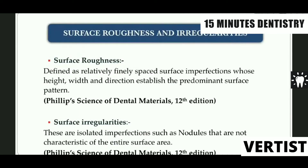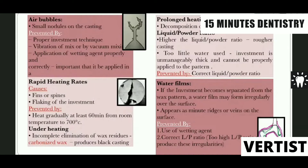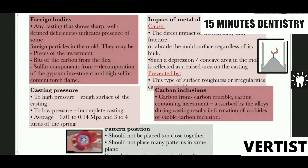The next defect is surface roughness and irregularities, defined as surface imperfections that appear as small nodules and air bubbles on the surface, as shown on the diagram. It can be prevented by proper investing techniques, mixing the investment properly, and application of a wetting agent. Rapid heating and prolonged heating can lead to decomposition of the investment. Proper liquid-water-powder ratio and vibrating the mix help eliminate air bubbles.